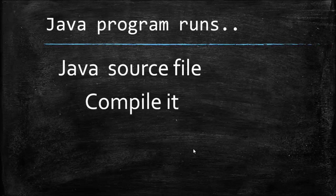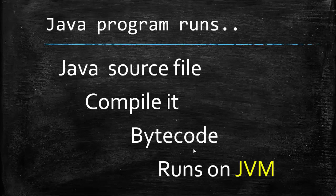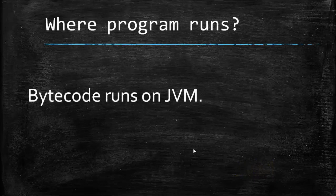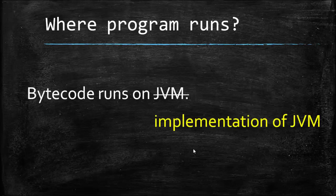In the case of Java, you have a source file, you compile it, and what you get is bytecode. Now this bytecode does not run on the operating system directly — it runs on the JVM. Your bytecode runs on JVM, but if you actually look closely, your bytecode runs on an implementation of JVM.